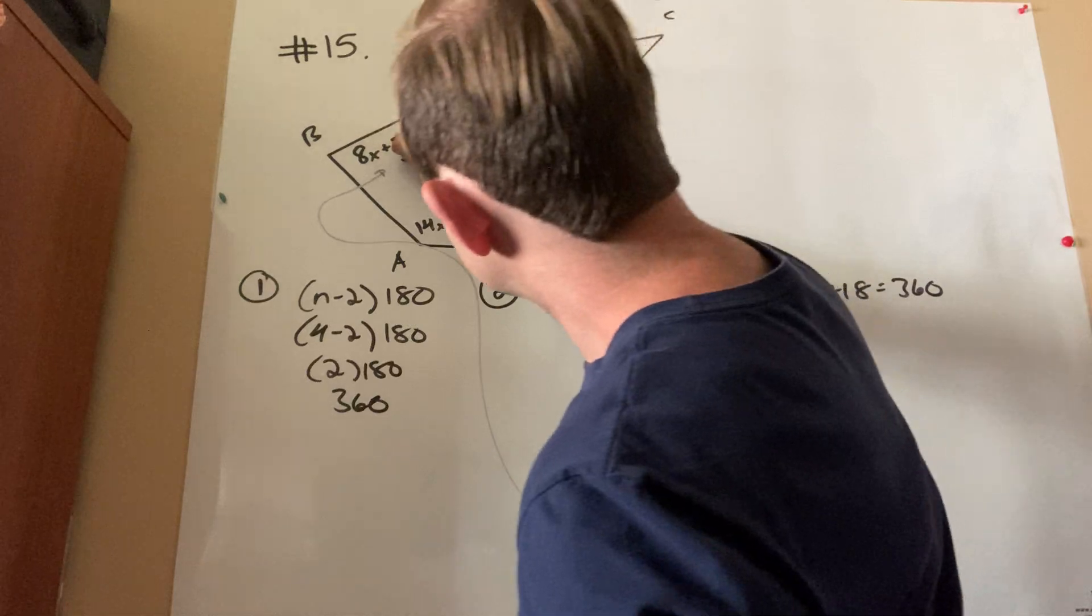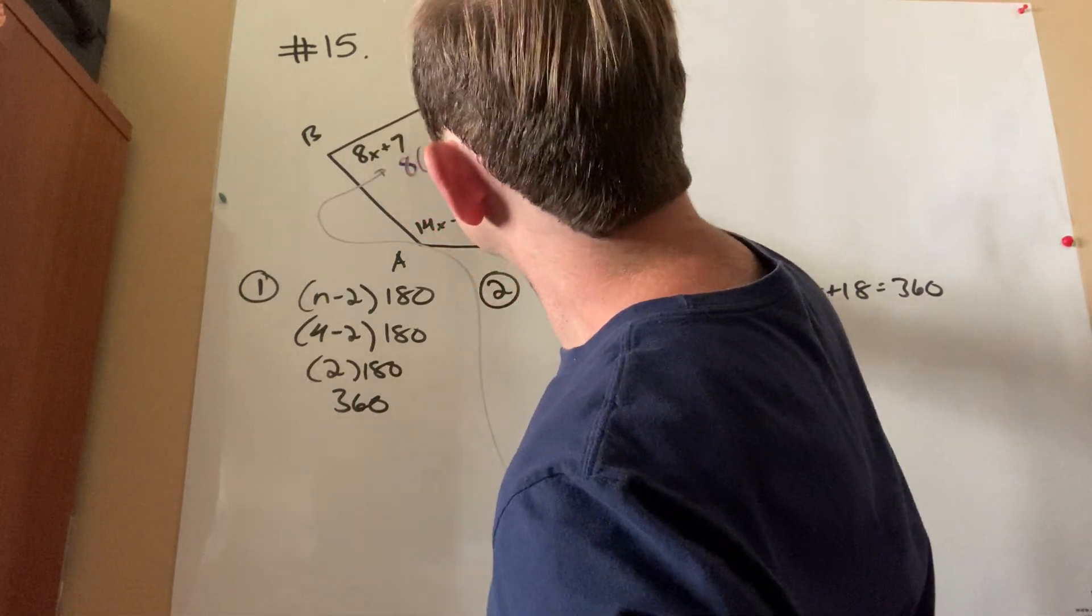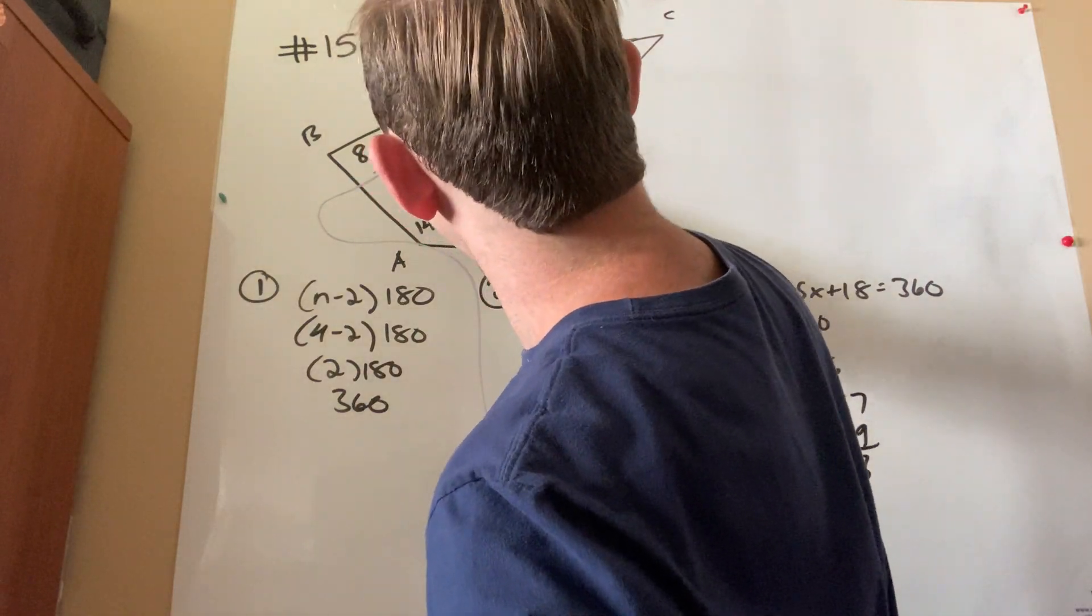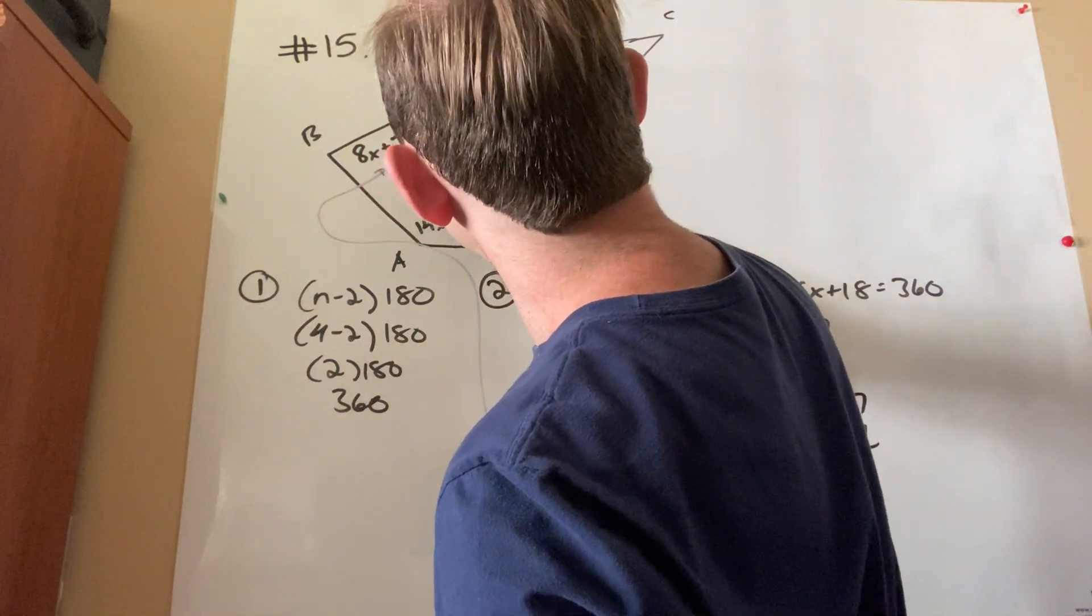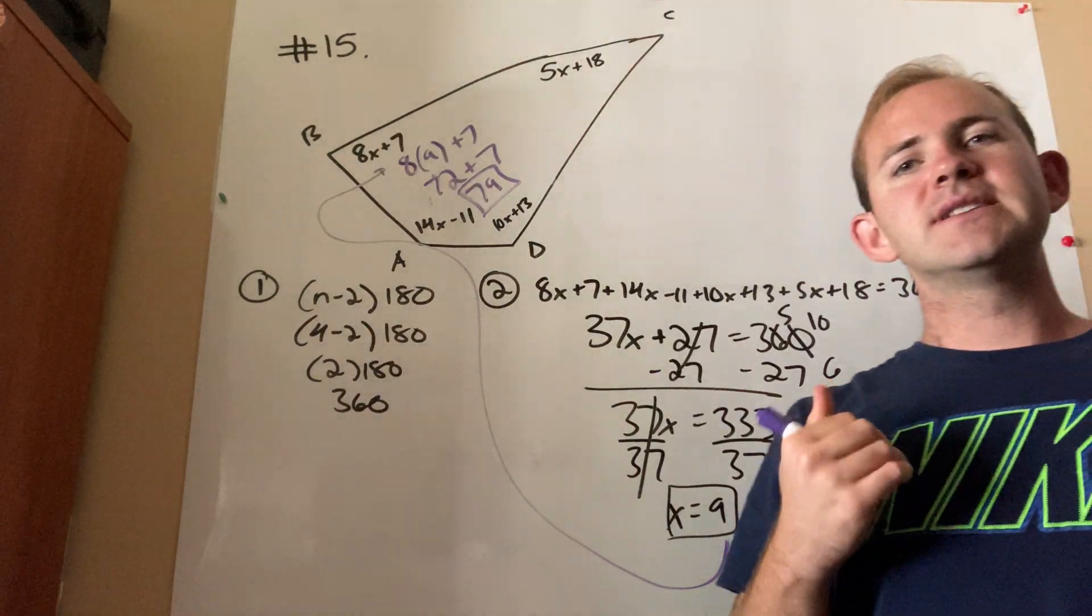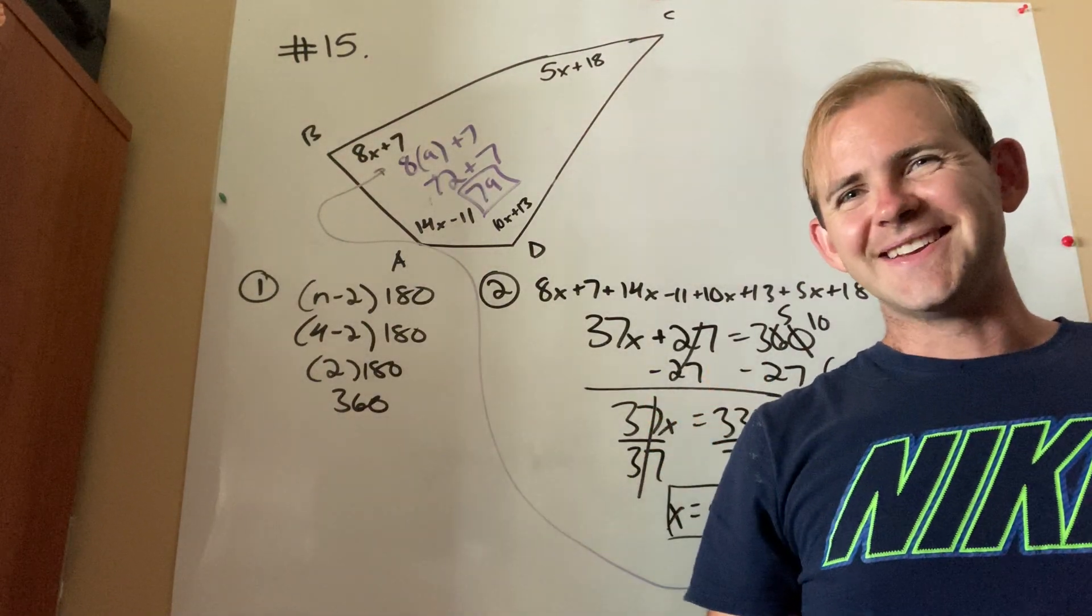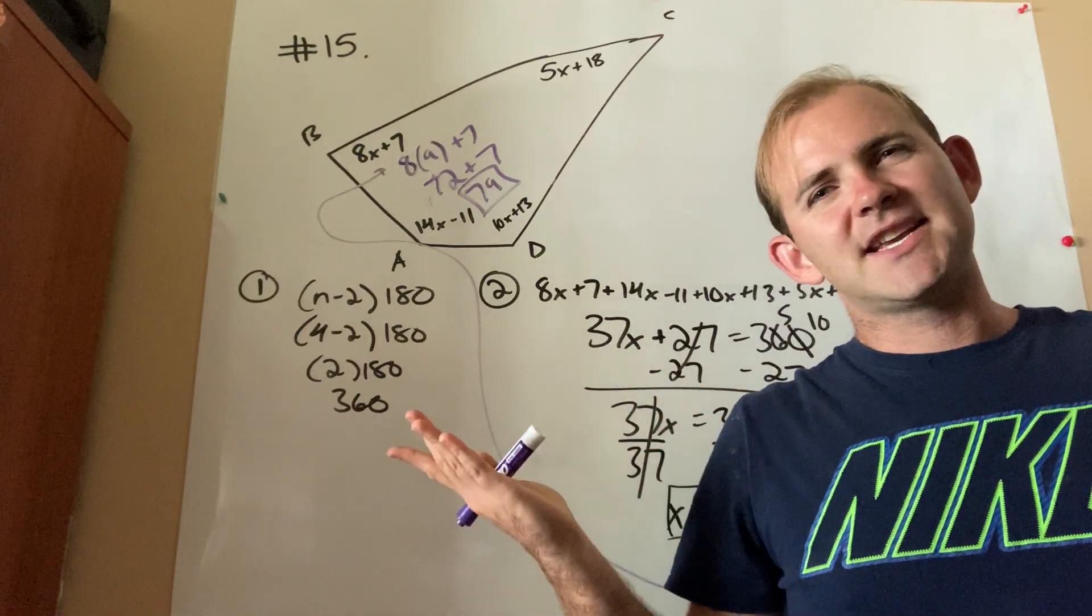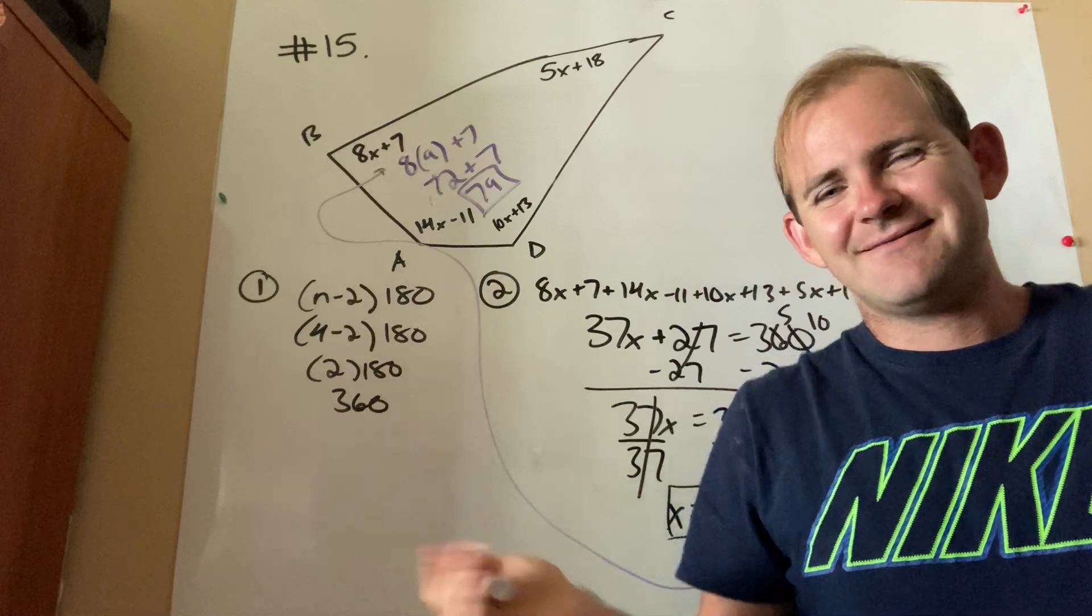So, in this case, I would say 8 times 9 plus 7. That's, I'm so sorry, I can't multiply. 72 plus 7. That would be 79 degrees. So, in sum, no pun intended, if you're dealing with an interior angles problem, first figure out how many degrees there are inside. Set up an equation. And solve.